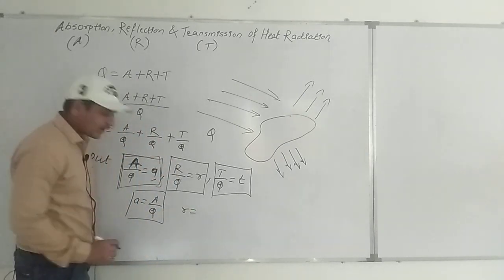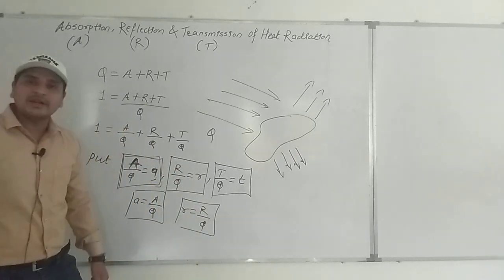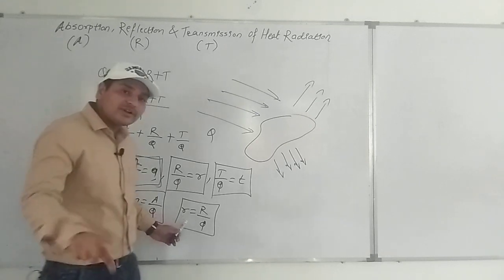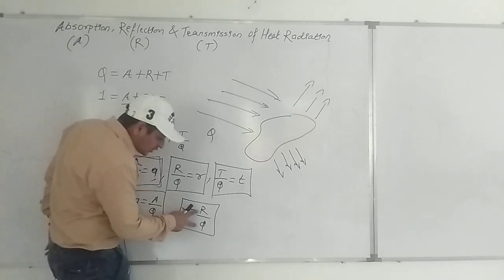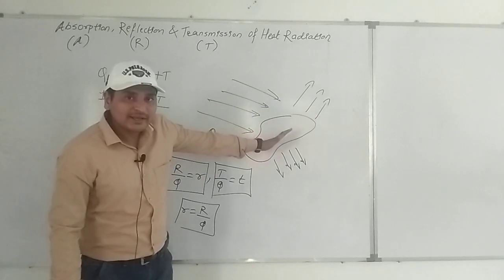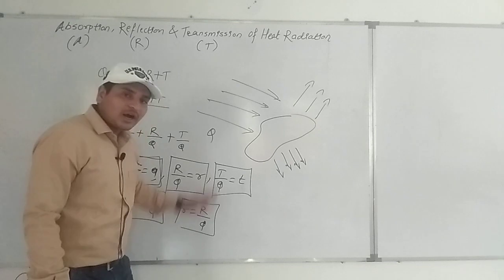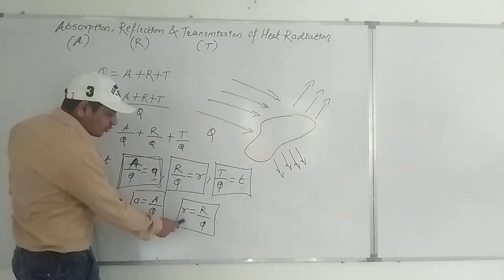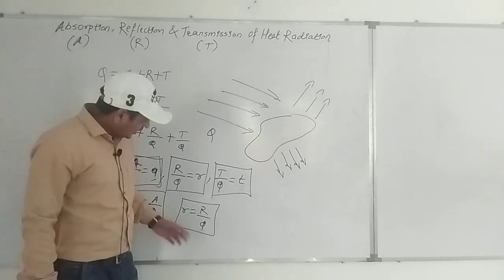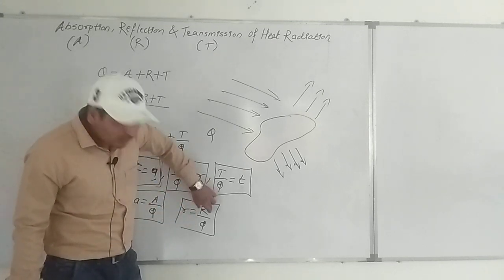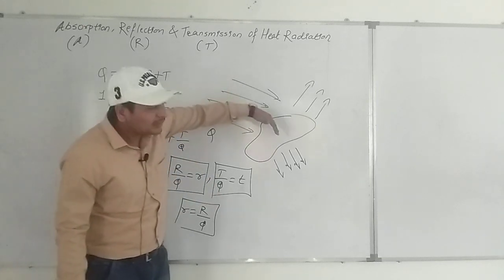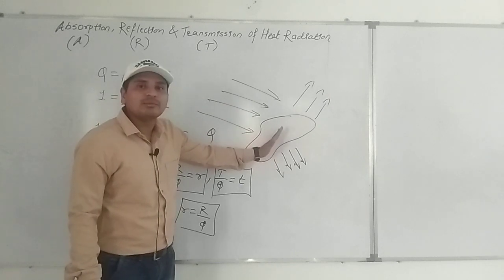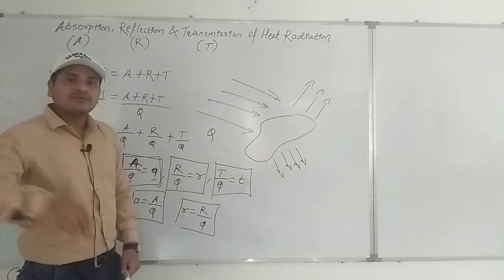Small r is the coefficient of reflection, or reflectance. It is the ratio of the amount of thermal energy reflected by the body at a certain time to the total amount of thermal energy incident on the body at the same time. That is the coefficient of reflection.